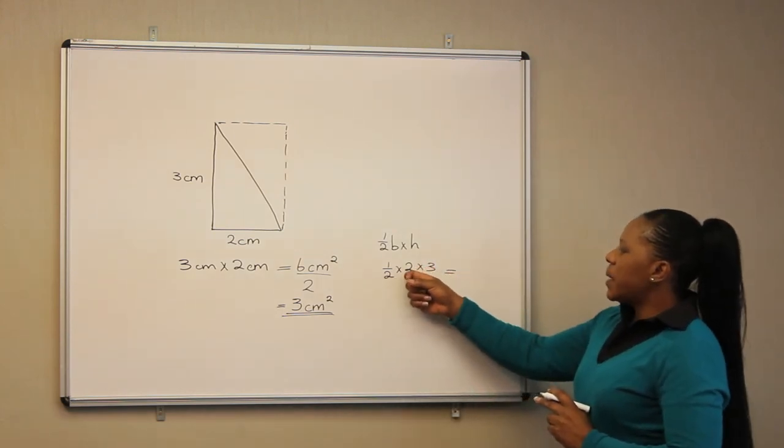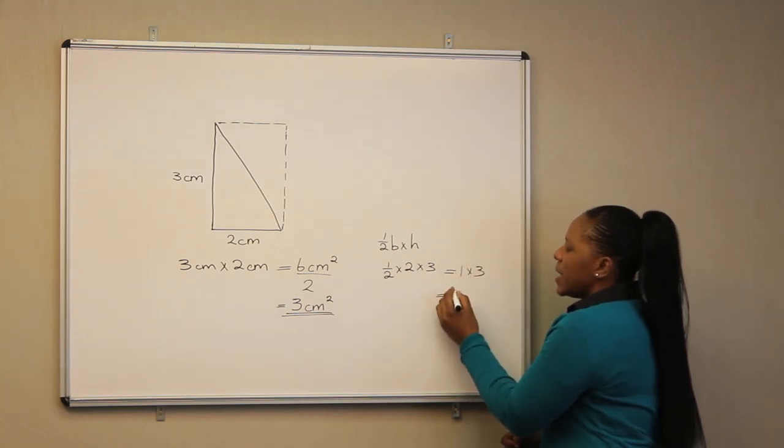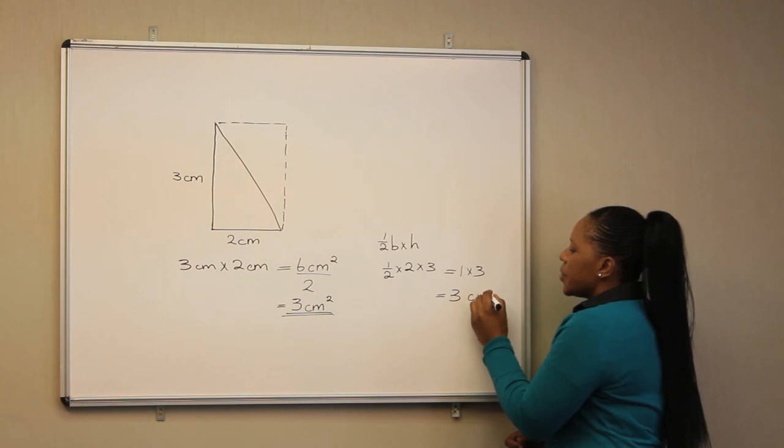Half multiplied by 2 gives us 1 times 3. Our answer is 3 cm².